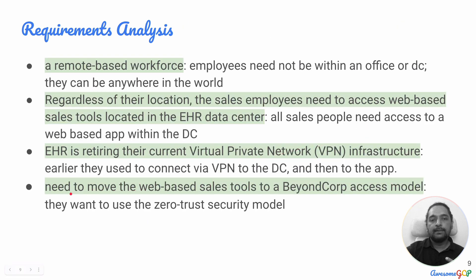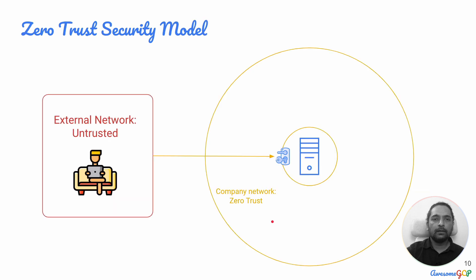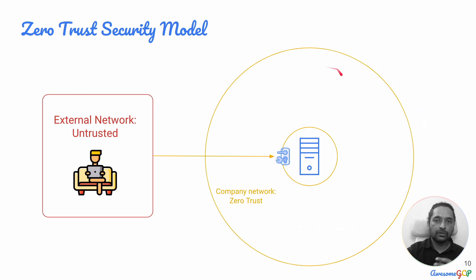The next key point is that they need to move their web-based sales tools to a BeyondCorp access model. The BeyondCorp access model is Google's implementation of what is called the Zero Trust security model. In the Zero Trust security model, unlike the previous case where once the user enters the network they have wide access to all applications and machines, the Zero Trust model says: we trust nothing and nobody.